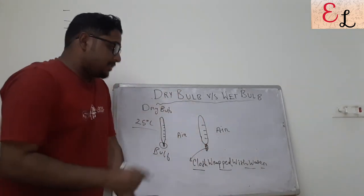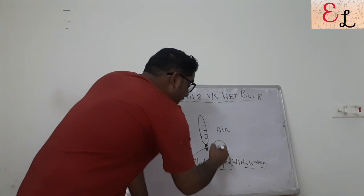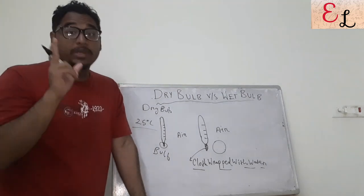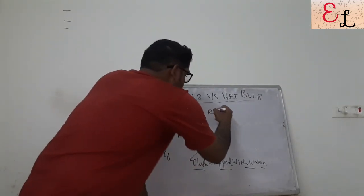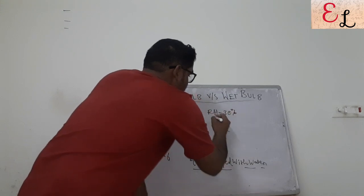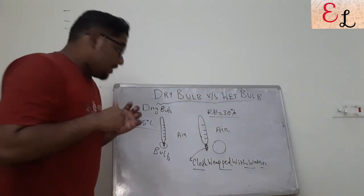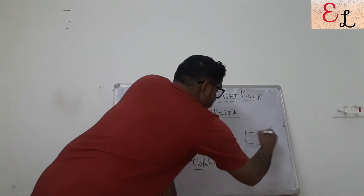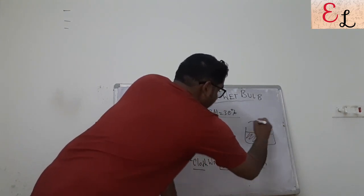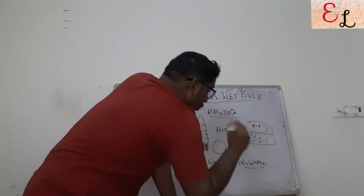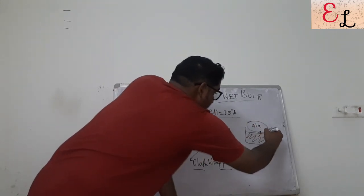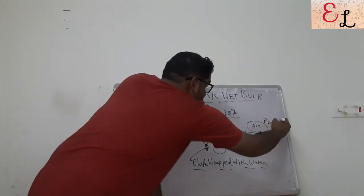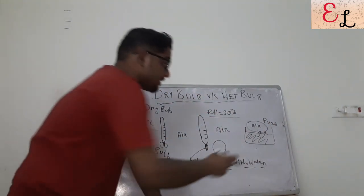It all depends on the air surrounding this bulb — specifically, whether the air is saturated with water or not, i.e., what is the relative humidity of the air. Suppose the relative humidity of air is 30%. There is sufficient space in the air to accommodate more water. If we keep a bucket of water and allow air above it, slowly this water will try to evaporate into the air.